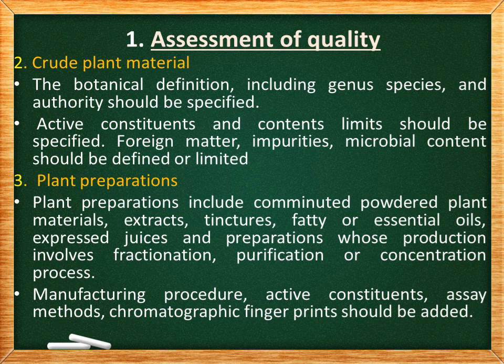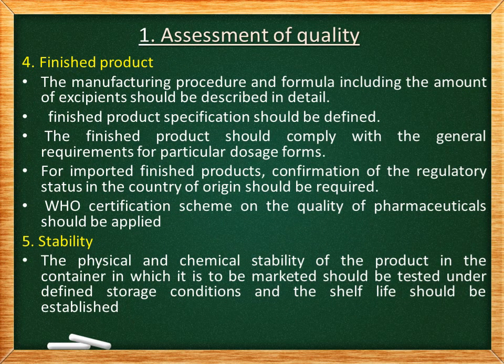Third is plant preparations. Plant preparations include comminuted or powdered plant materials, extracts, tinctures, essential oils, expressed juices, and preparations whose production involves fractionation, purification, or concentration. The manufacturing procedure, active constituents, and chromatographic fingerprint should be included.